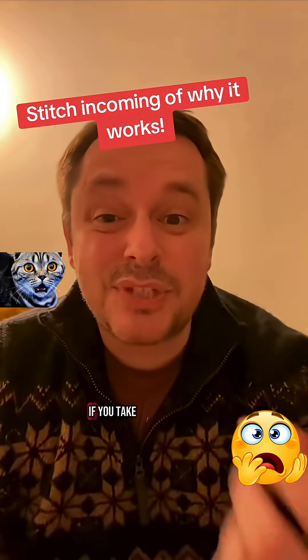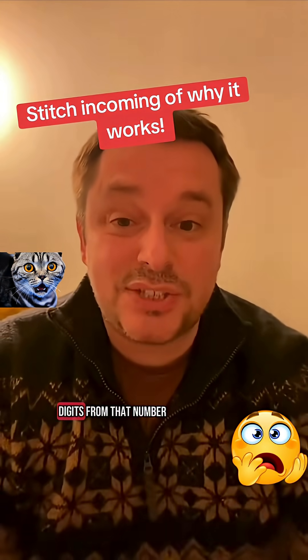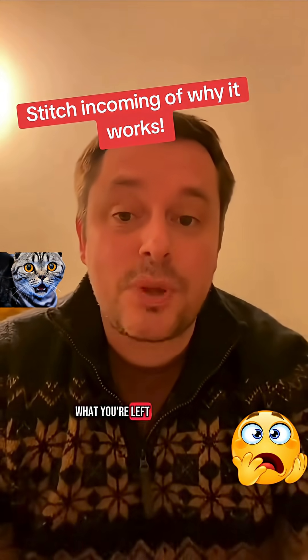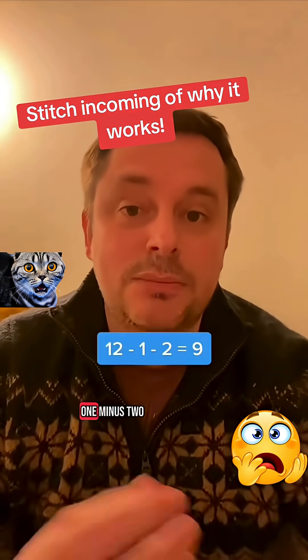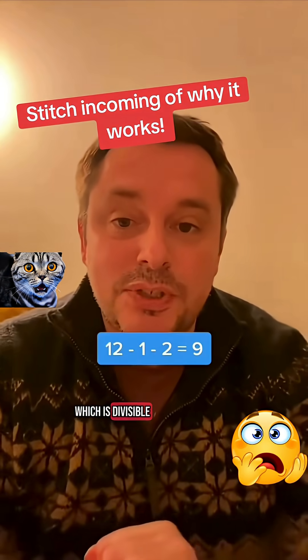For every number above 9, if you take away the value of the individual digits from that number, what you're left with is always divisible by 9. So 12 minus 1 minus 2 equals 9, which is divisible by 9.